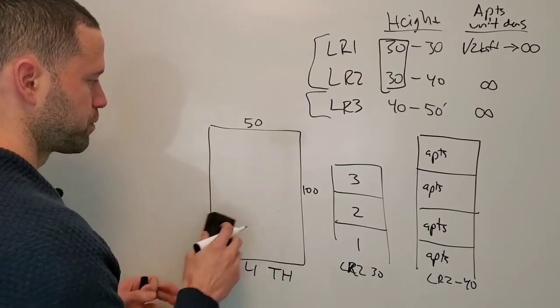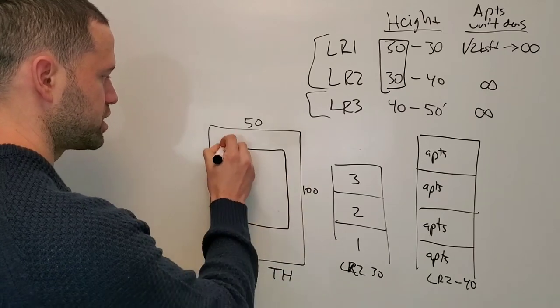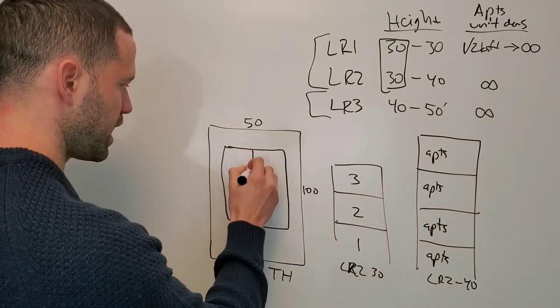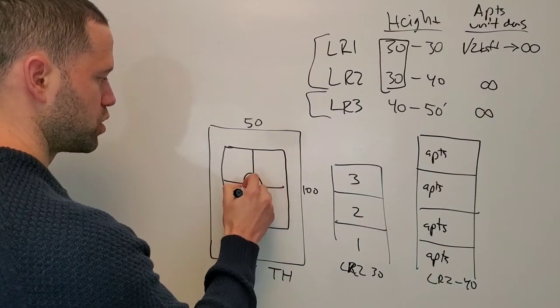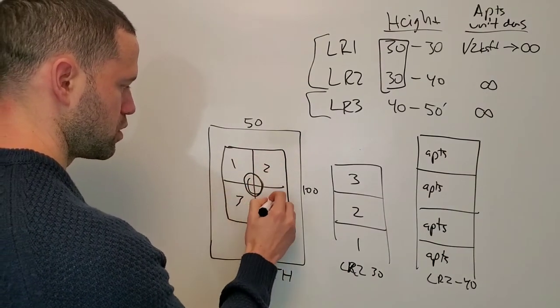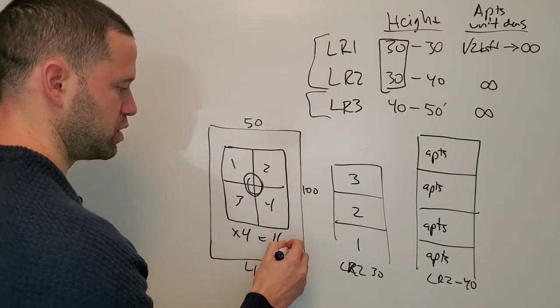You could instead build the same building envelope but just build micro units. You could have four apartments with circulation in the middle, and then four of those times four, so you have sixteen units.